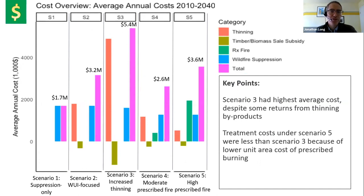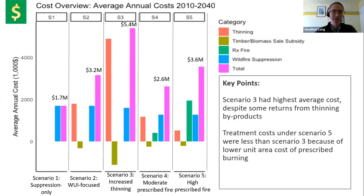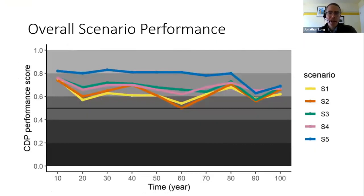Briefly on economics: the analysis looked at cost of implementation and cost of fire suppression. Scenario three had the highest implementation cost, even though it obtained some returns from thinning byproducts — lumber material and biomass for energy — but those returns were not enough to offset the cost of thinning. The two prescribed fire scenarios had generally lower cost of implementation, reflecting the lower unit area cost of prescribed burning. The EMDS analysis suggested that scenario five performed best overall.